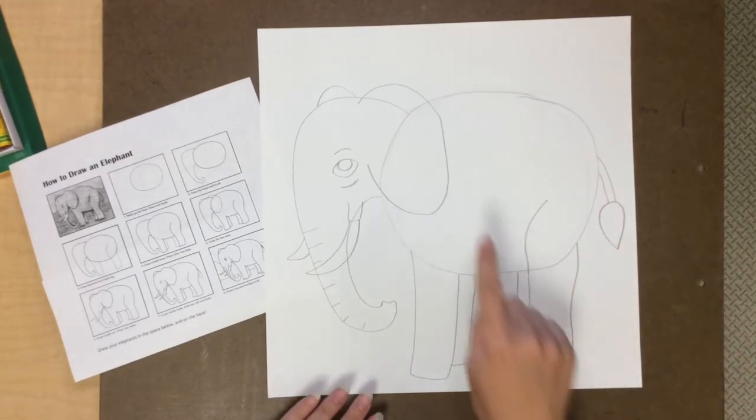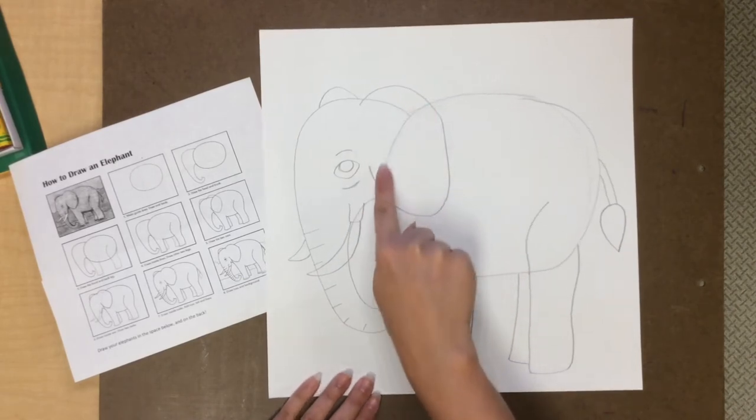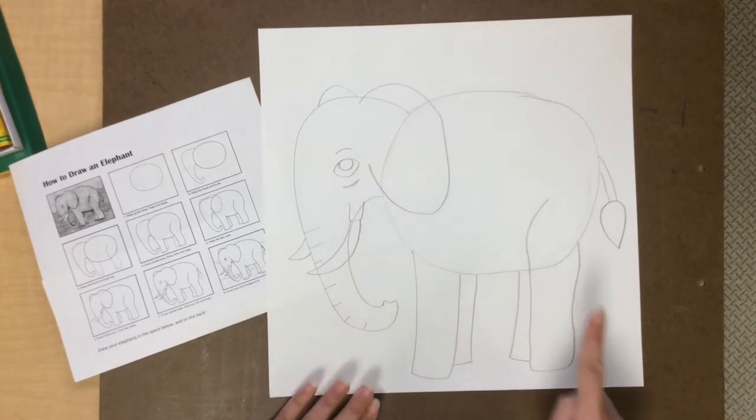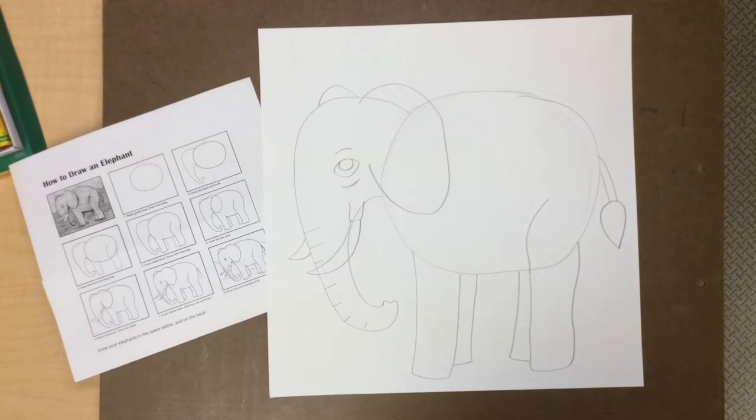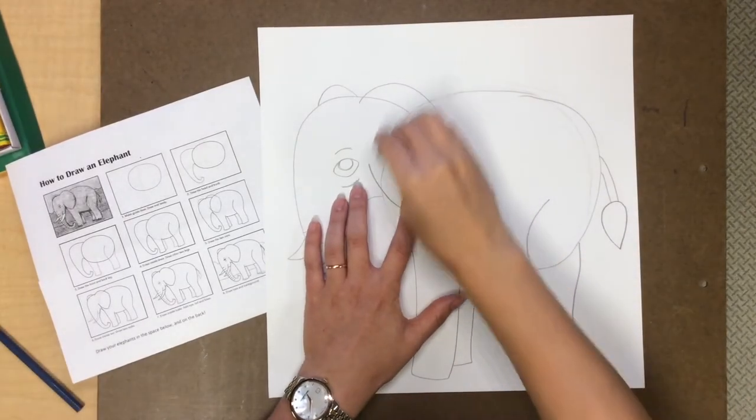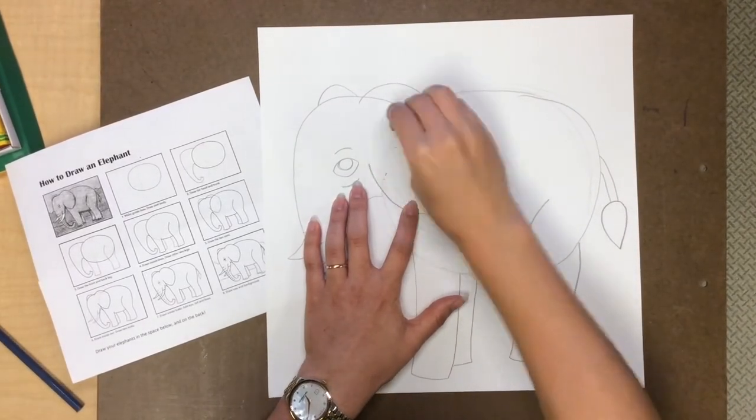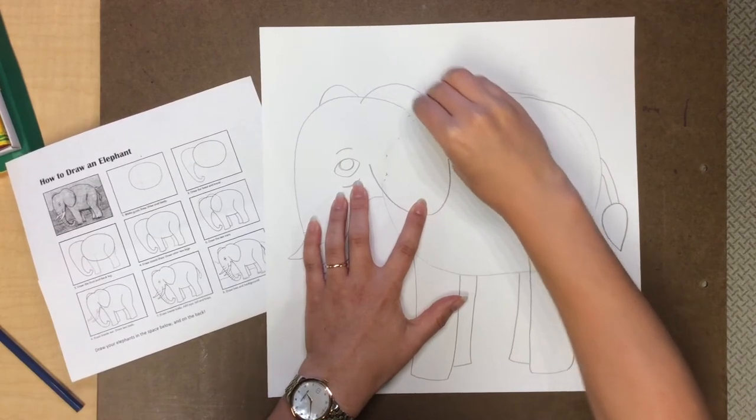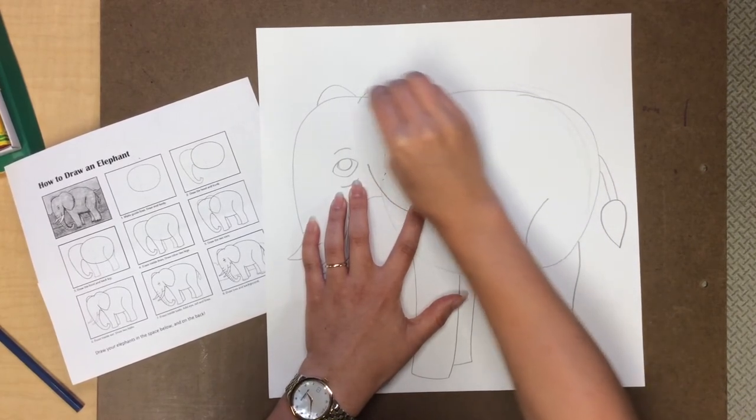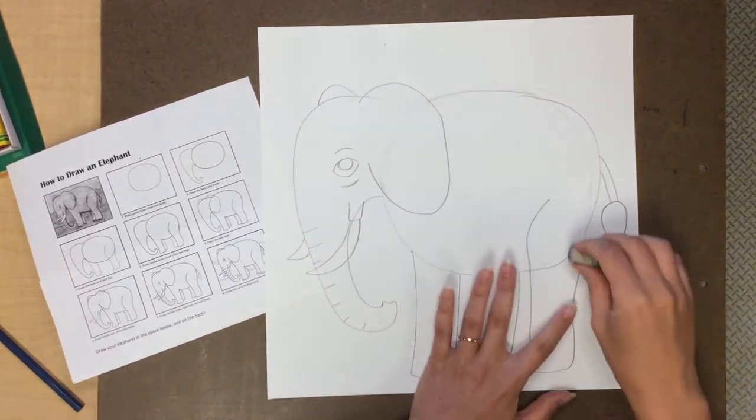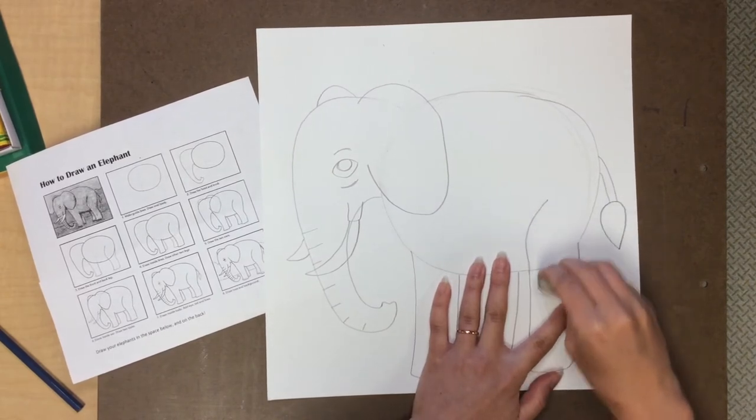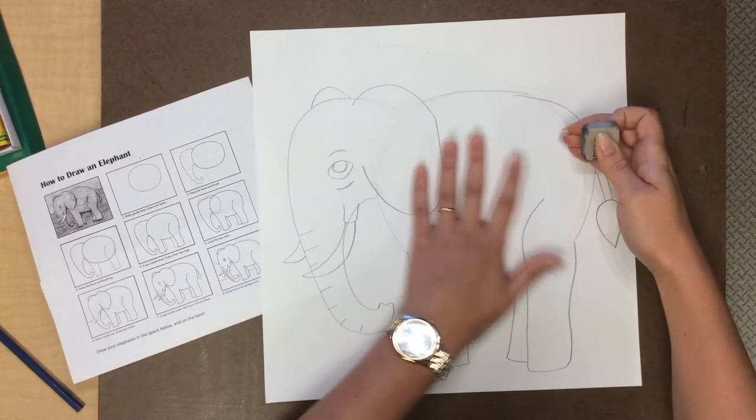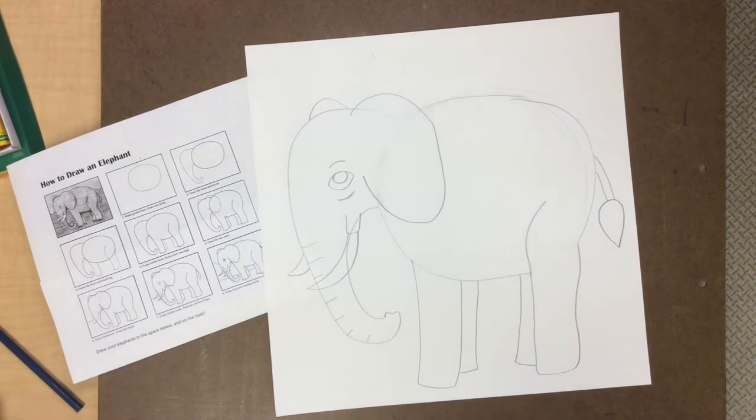Now the next step is you need to erase any lines that got overlapped by different parts of the elephant. So right here the ear is covering the elephant's body on top of his head. So I can erase that. And right here I can erase this. So that looks like the leg is overlapped.